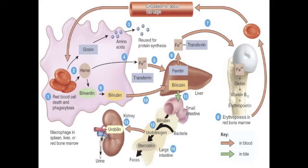Figure 19.5 on page 705 shows that the rate of red blood cell formation by the red bone marrow equals the rate of red blood cell destruction by macrophages. In step 1, macrophages in the spleen, liver, or red bone marrow phagocytize ruptured and worn-out red blood cells. In step 2, the globin and heme portions of hemoglobin are split apart. In step 3, the globin is broken down into amino acids, which can be reused to synthesize other proteins. Step 4: the iron is removed from the heme portion in the form of an iron ion.